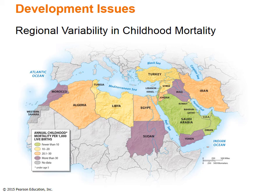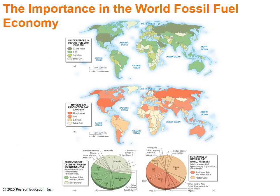Childhood mortality is an important issue in this region. Wealthier nations such as Israel and the UAE have very low rates of child mortality, but poor countries such as Sudan, Morocco, and Iraq continue to struggle with very high rates. This region plays a central role in global crude petroleum and natural gas production, with abundant regional reserves suggesting the pattern will continue. The maps and charts depict crude petroleum and natural gas production in 2011, along with the percentage of world reserves for each.